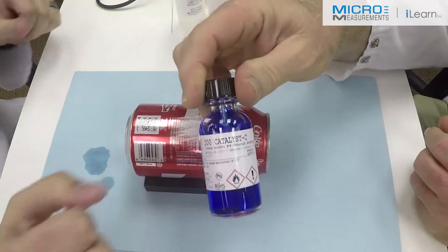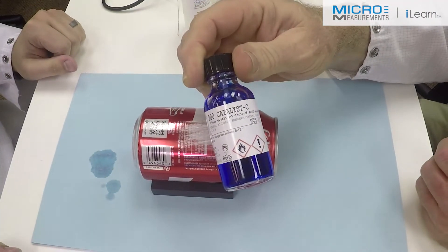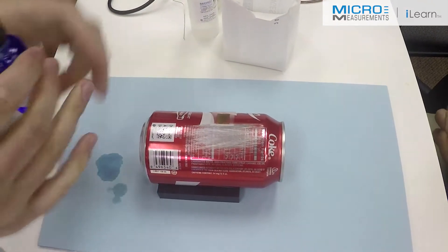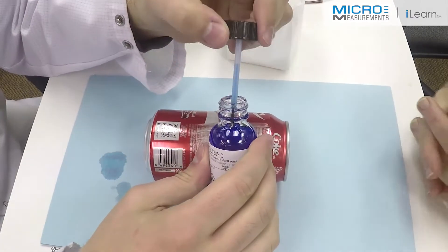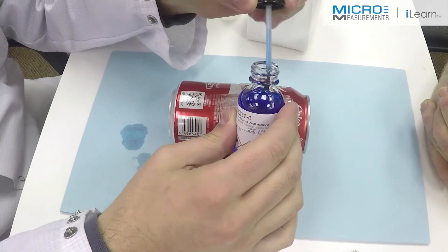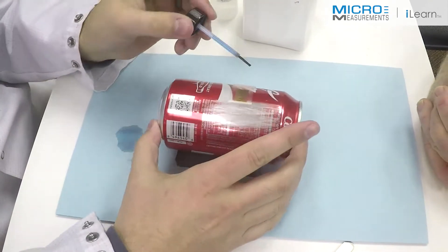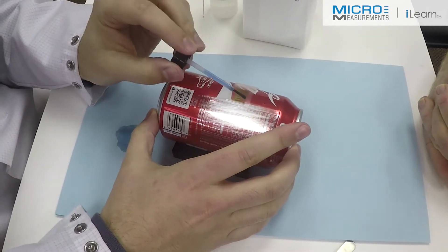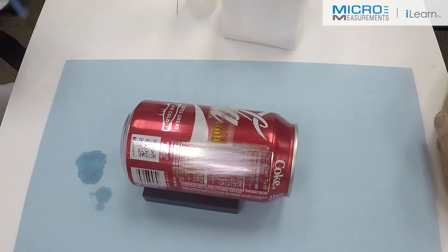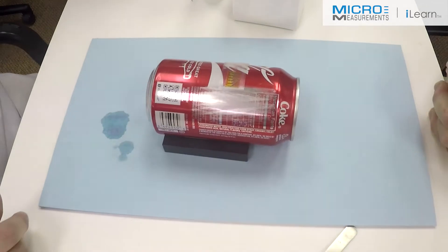The next step, we'll introduce the Catalyst C, the blue colored bottle. This is a controlling agent for the M-Bond 200. Colin will apply that to the back of the gauge. He'll knock the inside of the bottle, hit it eight or ten times, removing most of the liquid material. And then with a squeegee motion on the side of the bristles of the brush, he'll wet the surface of the gauge with that Catalyst C. And now we allow this to air dry for one full 60 second minute.